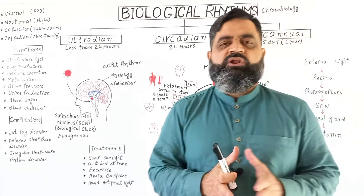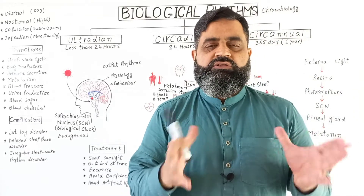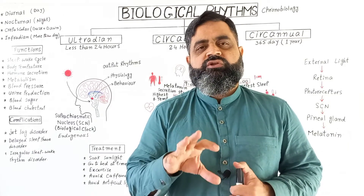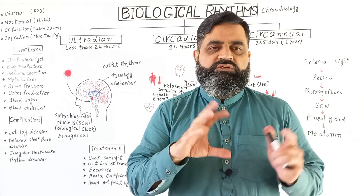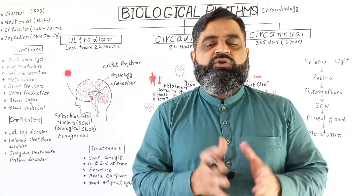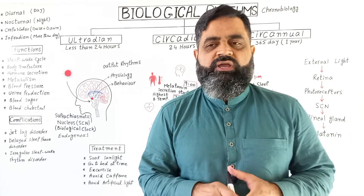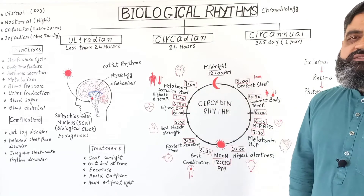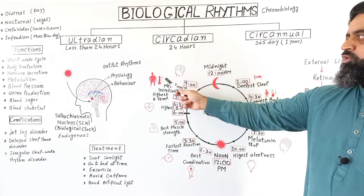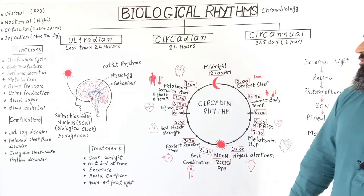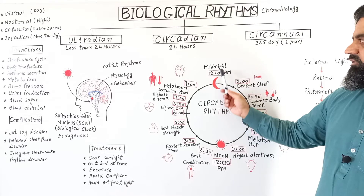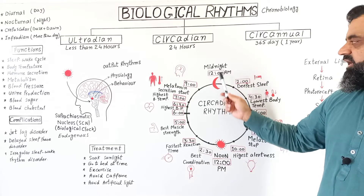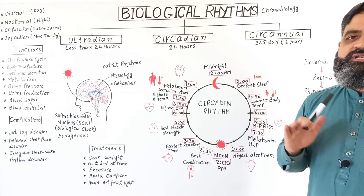Now I am going to discuss how these biological rhythms work in detail, using an example of biological rhythm in a human being. I have already made a diagram — this is a clock which represents the circadian rhythm of a human being. At midnight, 12 am, a person should be asleep.